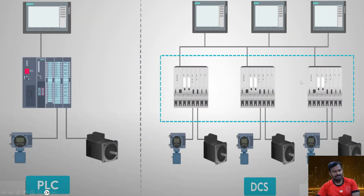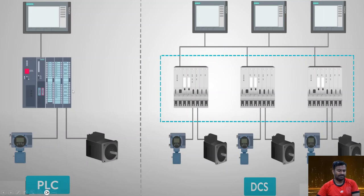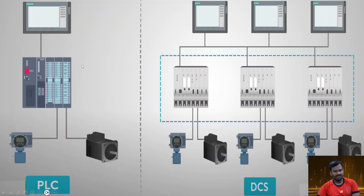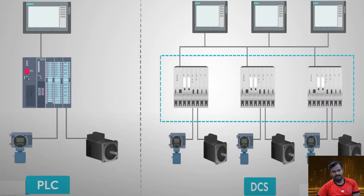Nowadays the features of DCS are available in PLCs themselves. PLCs now have sophisticated controls like function block diagram programming, more input/output control, and more control loops. The difference between PLC and DCS is becoming narrower, and they can be used interchangeably based on the application and requirement.